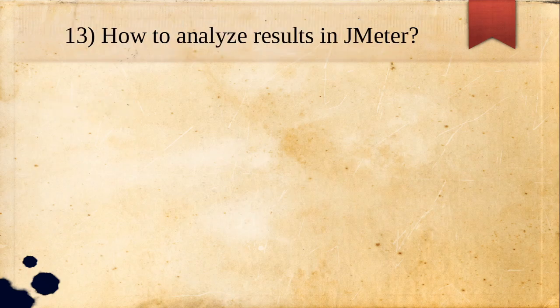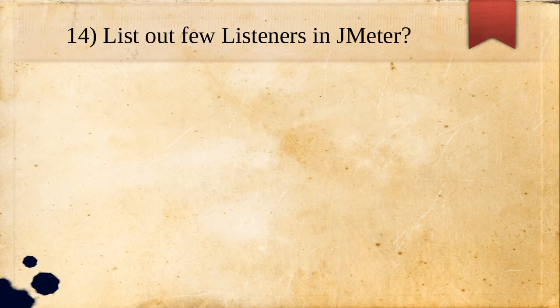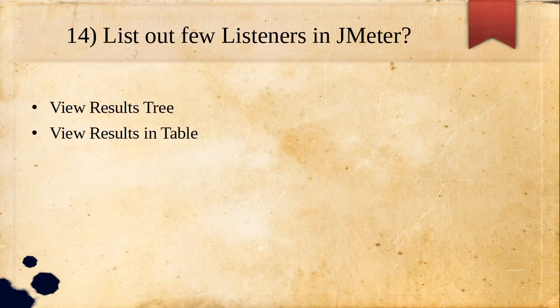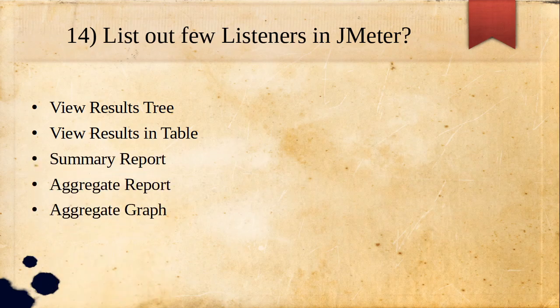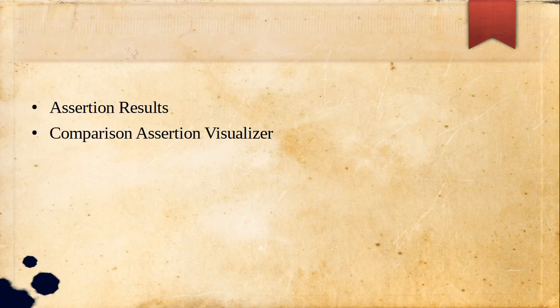How do you analyze results in JMeter? The answer is listeners. Listeners are components that show the results of samples, used for analyzing and reporting results. Some listeners available in JMeter include: View Results Tree, View Results in Table, Summary Report, Aggregate Report, Aggregate Graph, Assertion Results, Comparison Assertion Visualizer, Graph Results, and Response Time Graph.